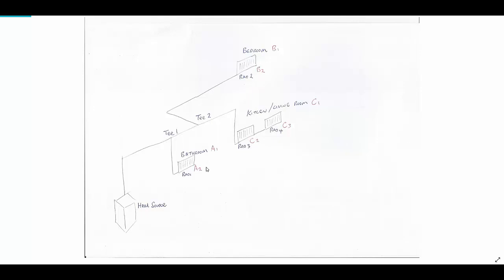What I mean by IDs is — we've got the heat source here (it doesn't matter whether it's renewable, conventional, or fossil fuels), with a primary flow coming off and then T1. T1 splits off to the bathroom, which we name A1, and the radiator within that room is A2. From T2, the bedroom is B1 and the radiator within there is B2.